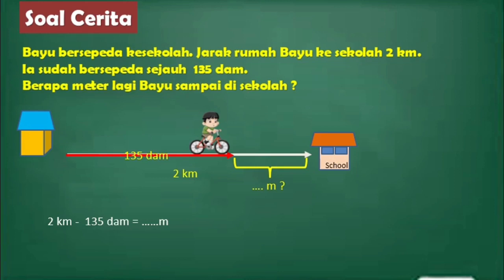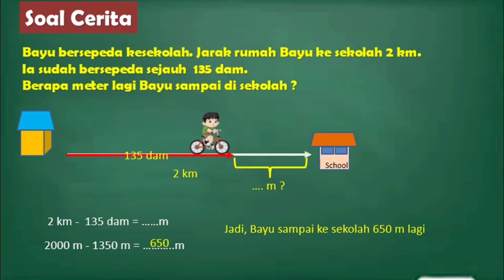Kita ubah dulu semuanya ke dalam bentuk meter. 2 km nilainya berapa meter? Karena turun 3 tangga berarti dikalikan dengan 1.000 menjadi 2.000 meter. Dan 135 dekameter, karena turun 1 tangga berarti dikalikan dengan 10 menjadi 1.350 meter. Kalau semuanya sudah sama-sama meter, langsung kita kurangkan. Hasilnya adalah 650 meter. Jadi Bayu sampai ke sekolah jaraknya adalah 650 meter lagi.